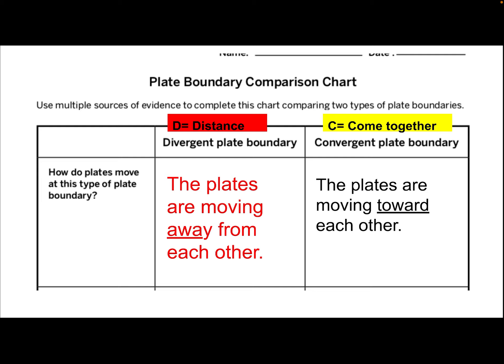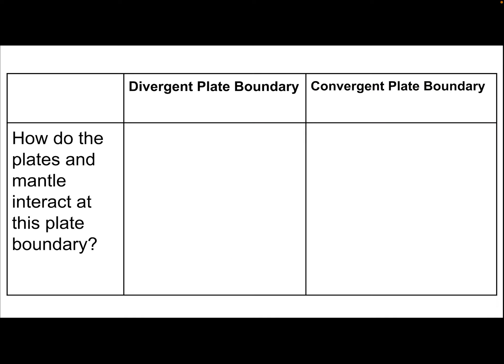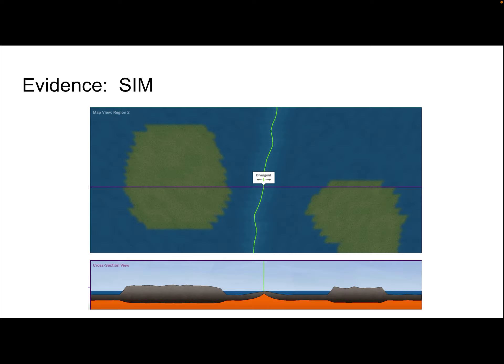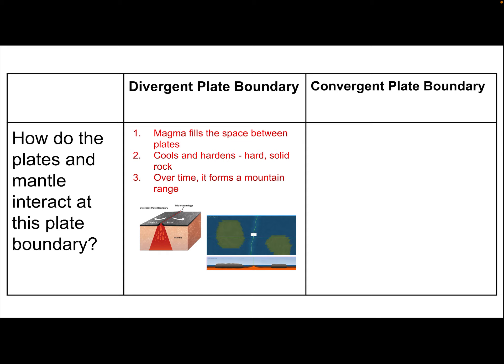Collide was another word, and I think that was actually in the article. Convergent plate boundaries are plates that are moving towards each other. The second question was: how do the plates and the mantle interact at this plate boundary? Using evidence from the Listening to Earth article and our sim, we know that at divergent plate boundaries, magma fills the space between the plates, and then it cools and hardens into solid rock, and over time it forms a mountain range.